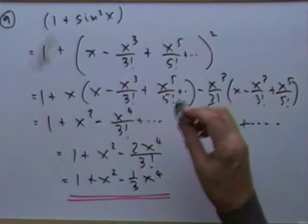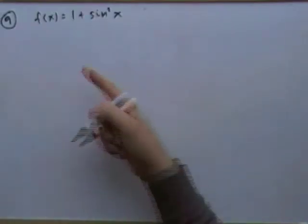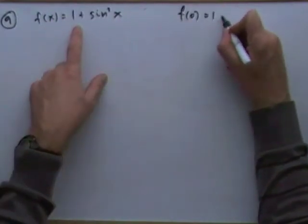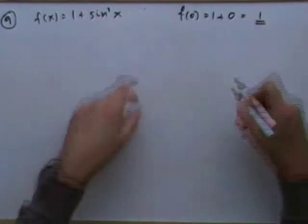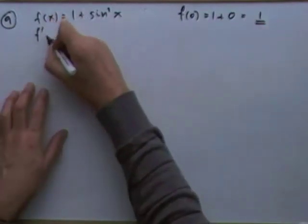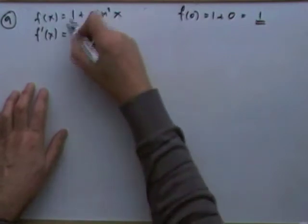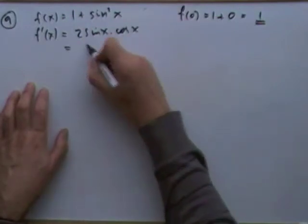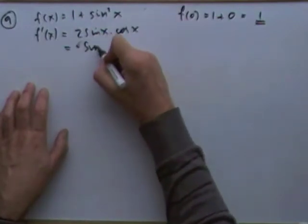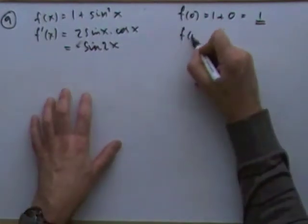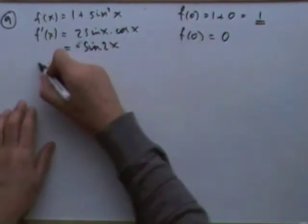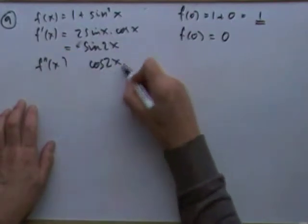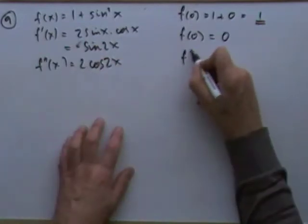Now the derivative method. The original function at x = 0 gives 1 + sin²(0) = 1, so I only need two more non-zero terms. The first derivative: the constant 1 disappears, giving 2 sin x cos x = sin 2x. The value at zero is sin(0) = 0, so I go again. The second derivative: d/dx(sin 2x) = 2cos 2x, so the value at zero is 2.